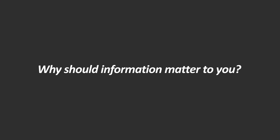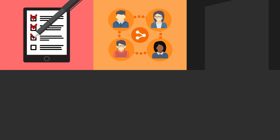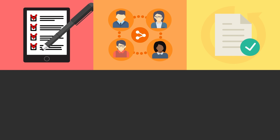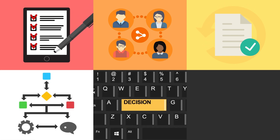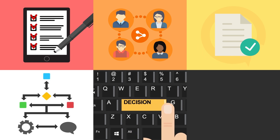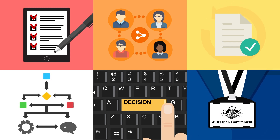So why should information matter to you? In your everyday work, creating and managing accurate information helps you to find and use it to complete business tasks and processes, share it with colleagues and stakeholders, reuse good work done in the past, use it to support system workflows and approvals, make better informed decisions through quicker access to accurate and trusted information, and be accountable for your actions as an Australian government employee.